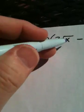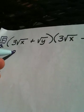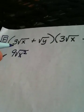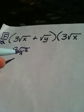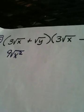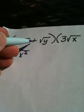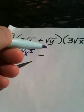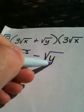3 root x times 3 root x becomes 9 root x squared—the 3 times 3 is 9, root x times root x is root x squared. We don't need to do the outer, we don't need to do the inner, and now we need to do the last. Positive times negative is negative. Root y times root y is the square root of y squared.